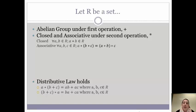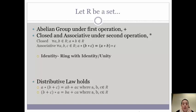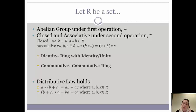However, we can have a couple of extra properties which make us have a special type of ring. If we have a multiplicative identity or a second operation identity, we can say that we have a ring with identity or a ring with unity — identity and unity are used interchangeably, so just watch out for that. And if we are commutative under our second operation, we can say that we have a commutative ring.